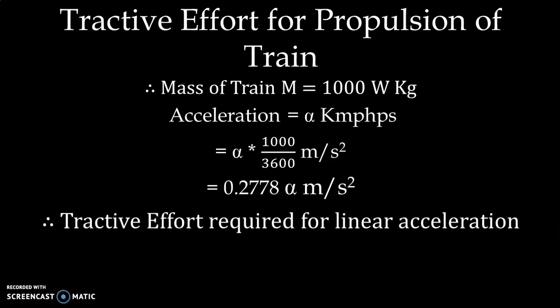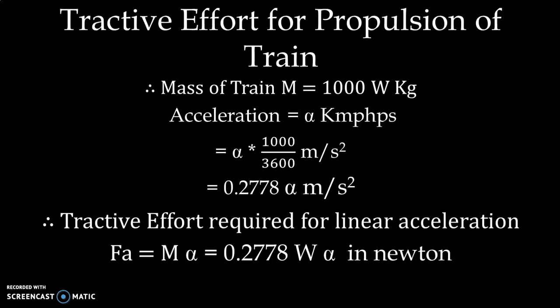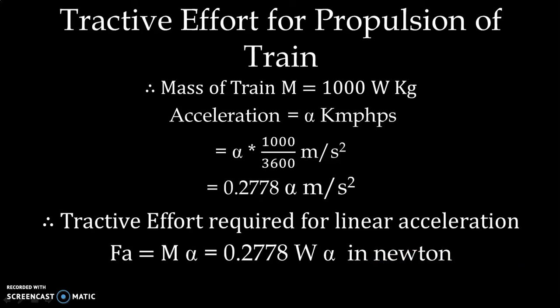Therefore, the total tractive effort required for linear acceleration can be expressed as Fa = mass × acceleration = 0.2778 × W × alpha Newtons, where W is the weight of the train and alpha is the acceleration. This gives the force required for linear acceleration.